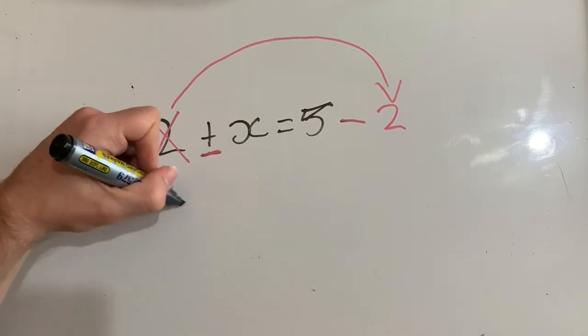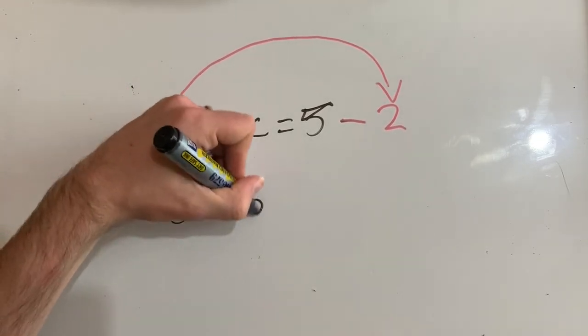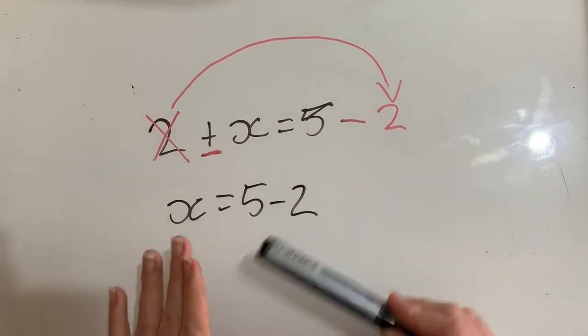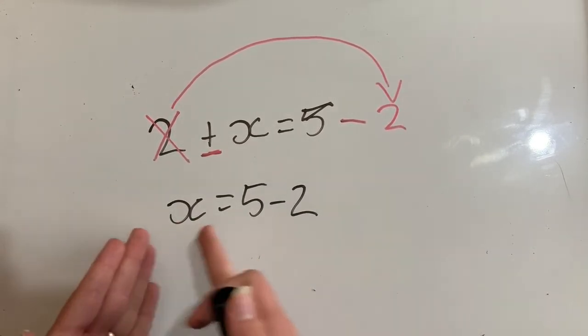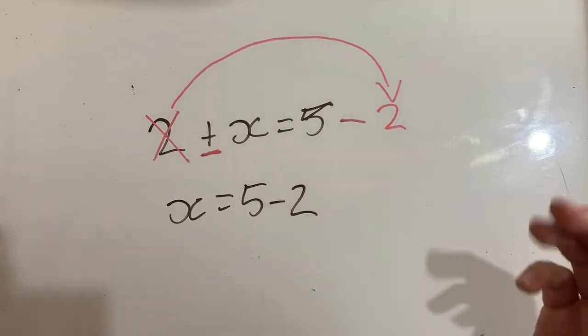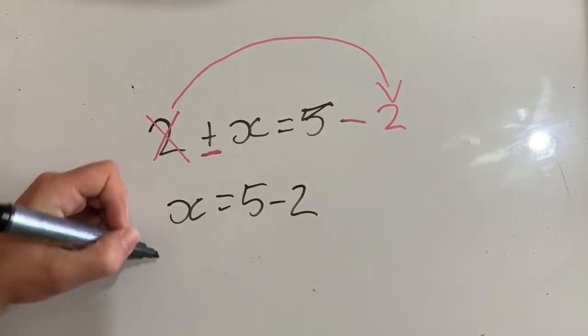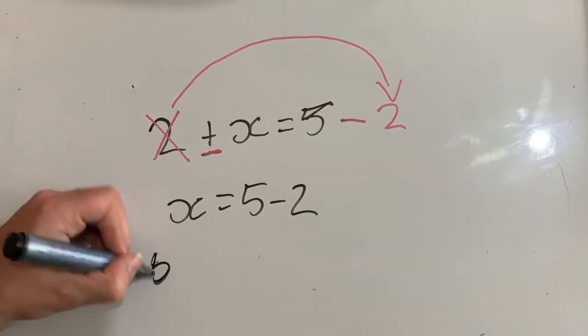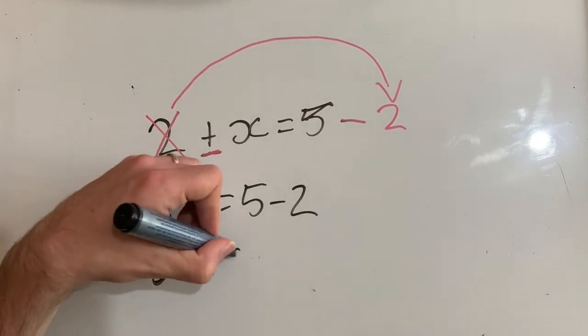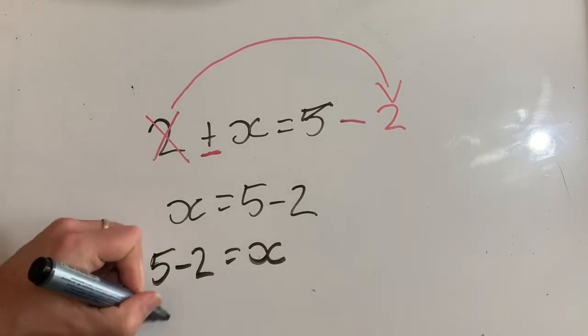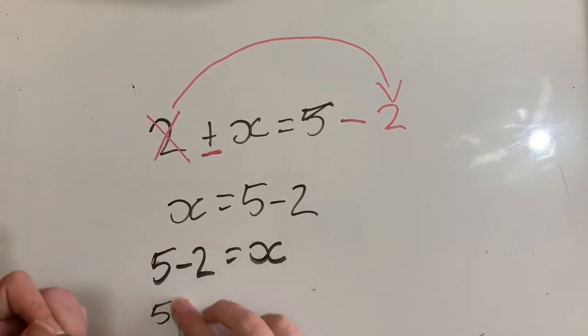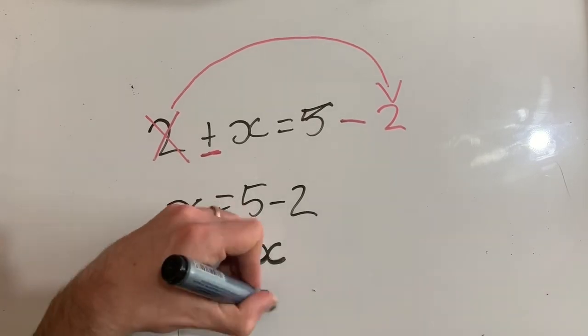Let me rewrite this so it makes a little bit more sense now. So now we've got x equals 5 minus 2. Now because these are exactly the same on each side, it doesn't actually matter which side I write these expressions on. So I'm going to write it in a way that might make a little more sense. I'm just going to flip the expressions around. So we've got 5 minus 2 equals x. This is looking like something I can solve for. I know that 5 minus 2. Now 5 minus 2 equals 3.